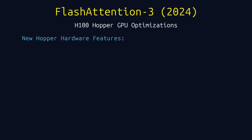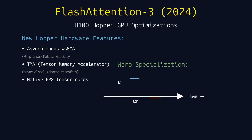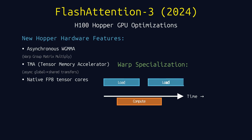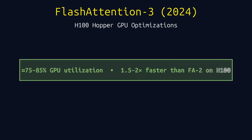Flash Attention 3, released in 2024, is optimized specifically for NVIDIA's H100 Hopper GPUs. Hopper introduced new hardware features: asynchronous warp group matrix multiply, the tensor memory accelerator for async data transfers, and native FP8 tensor cores. Flash Attention 3 uses warp specialization — some warps are dedicated to loading data from HBM using the tensor memory accelerator, while others are dedicated to computing matrix multiplies using the asynchronous WGMMA instruction. This creates a producer-consumer pipeline where loading and computation overlap. The result: 85% GPU utilization and a 17% speed-up over Flash Attention 2 on H100.